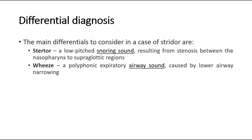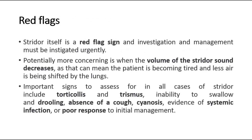The main differentials to consider in a case of stridor are stertor, which is a low-pitched snoring sound resulting from stenosis between the nasopharynx to supraglottic regions, and wheeze, which is a polyphonic expiratory airway sound caused by lower airway narrowing.